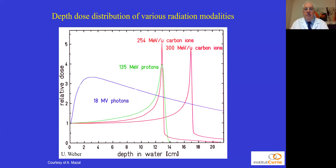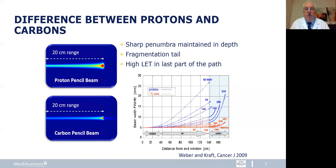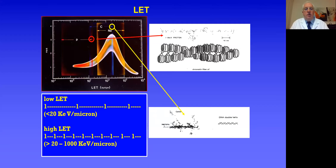You have by now seen the Bragg peak components. What is actually quite important is that you have the protons with the Bragg peak in green, but you see how carbon ions have a very sharp dose fall-off. They do have the disadvantage of the fragmentation tail, but overall have a very sharp dose fall-off.